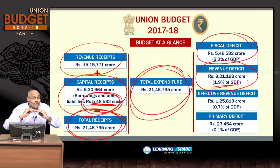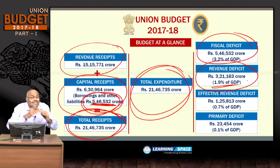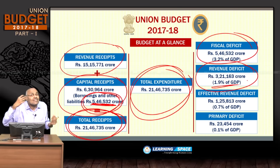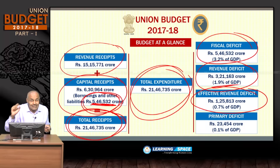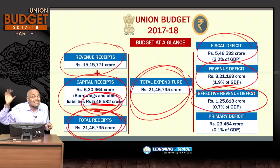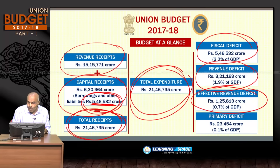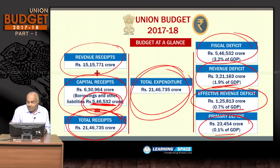Revenue receipts are not sufficient for revenue expenditure, meaning some capital receipts meant for asset creation are being used for revenue expenditure. Effective revenue deficit, after subtracting grants to state governments that go toward creating assets, is 0.7% of GDP. Primary deficit — fiscal deficit minus interest payments — is 0.1% of GDP.